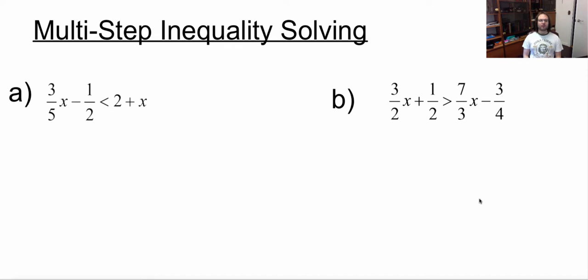We have 3 over 5x minus 1 half is less than 2 plus x. In this case here, first thing is, I want to get all my x's on the same side. I'm going to look at which side has my bigger x, and that's going to be my right hand side. So I'm going to subtract 3 over 5x from both sides.